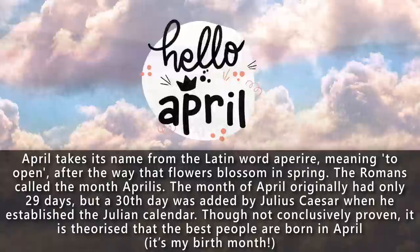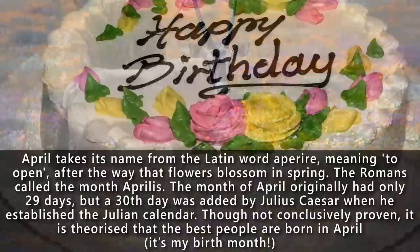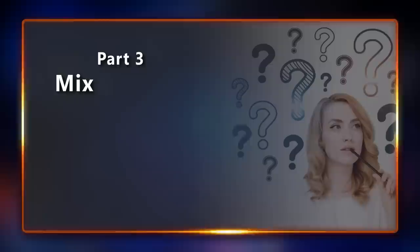Did you know that April takes its name from the Latin word 'aperire' meaning 'to open,' after the way that flowers blossom in spring? The Romans called the month Aprilis. The month of April originally had only 29 days, but a 30th day was added by Julius Caesar when he established the Julian calendar. Though not conclusively proven, it is theorized that the best people are born in April.